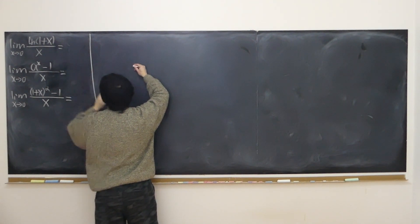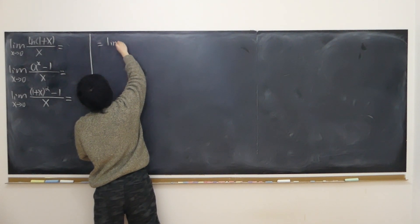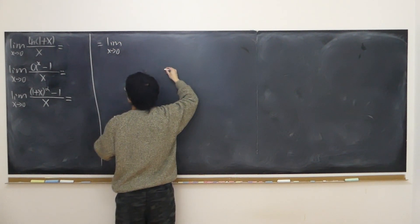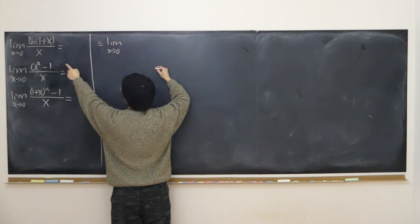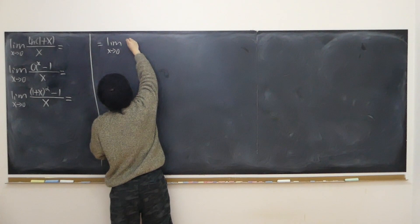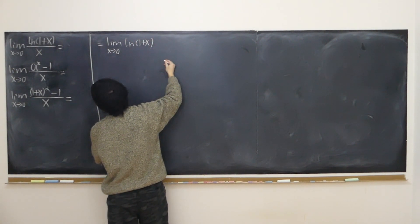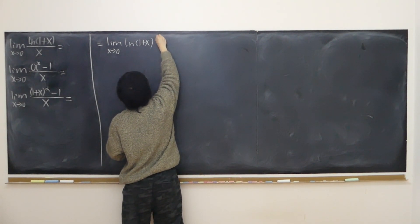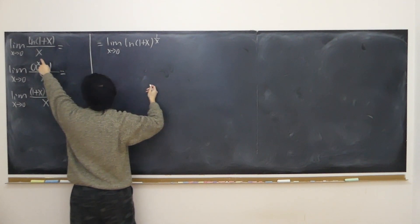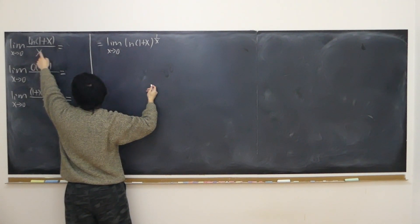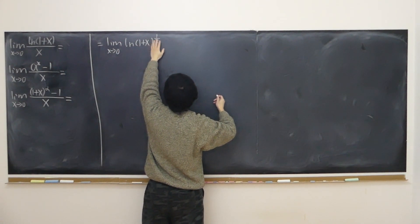So the first limit is equal to the limit as x approaches 0. Let's do some transformation. According to the logarithm rule, we can rewrite it as the logarithm of (1 + x) to the power of 1 over x. That's what it means — x in the denominator means 1 over x times the logarithm, so we can put the 1 over x up as the power.